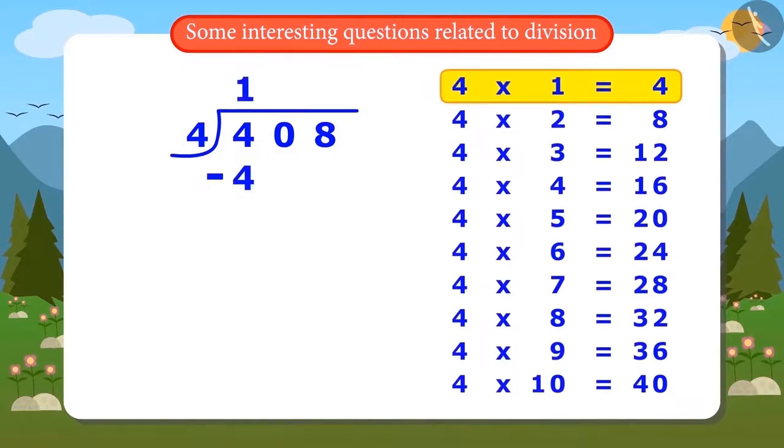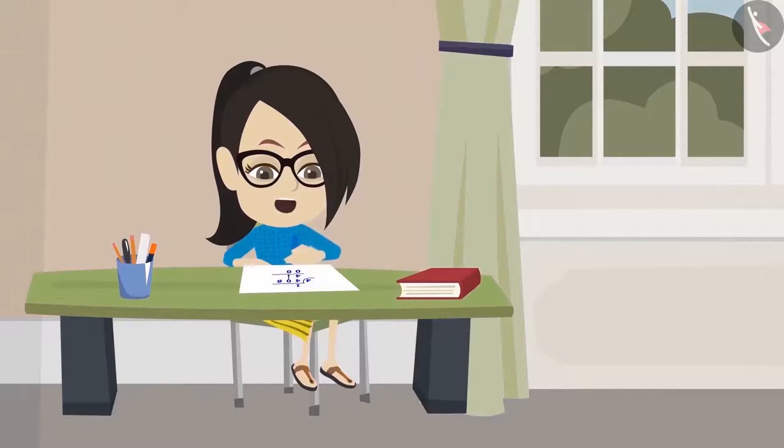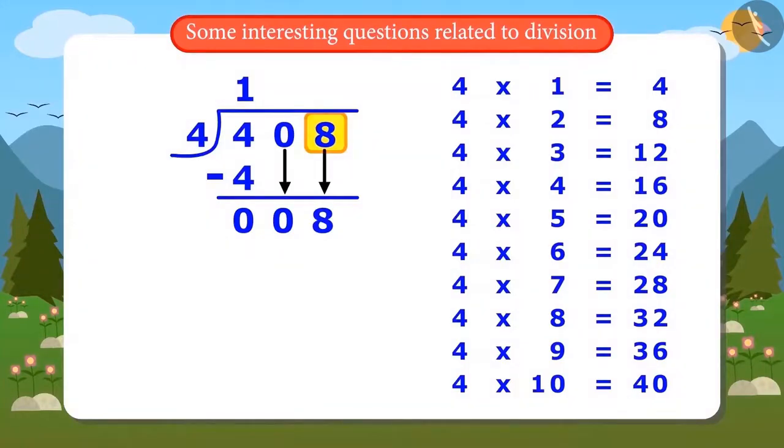4 ones are 4. Remaining is 0. Now write down the next number 0. Hey, this one is also 0. What do I do now? Let me also write down the next number. Write down 8. So now the number becomes 8. Now it's right.